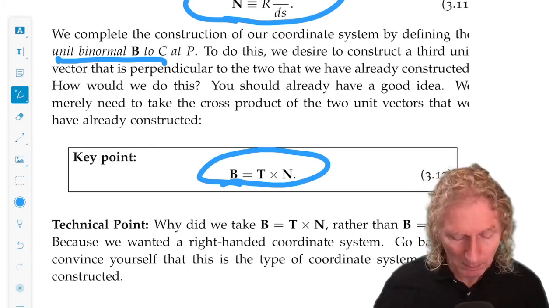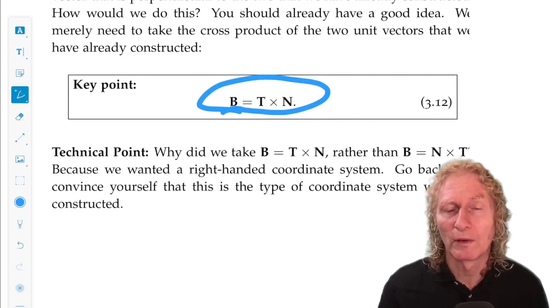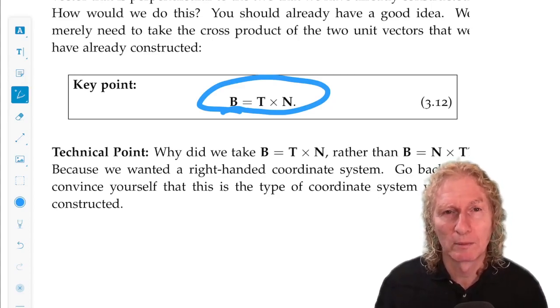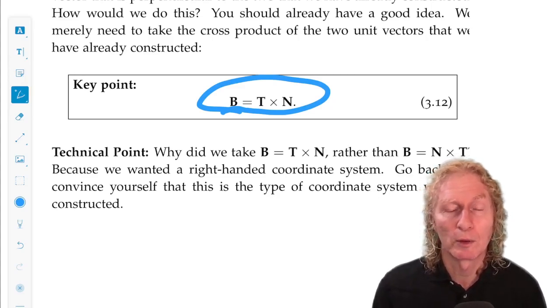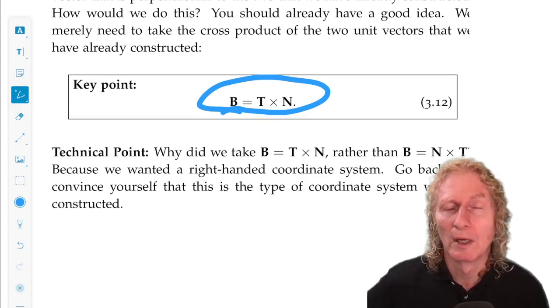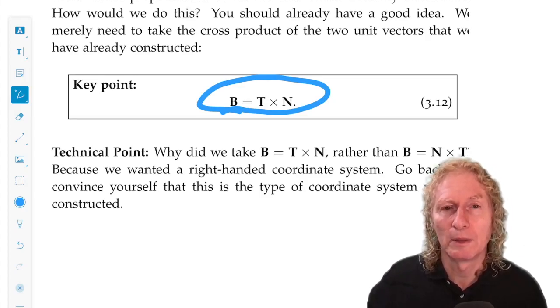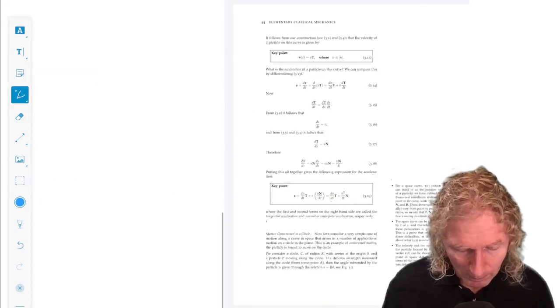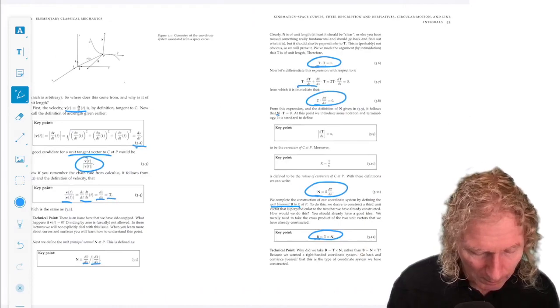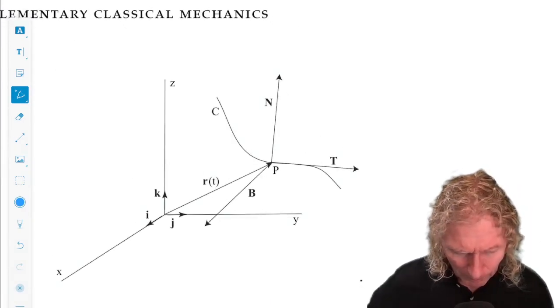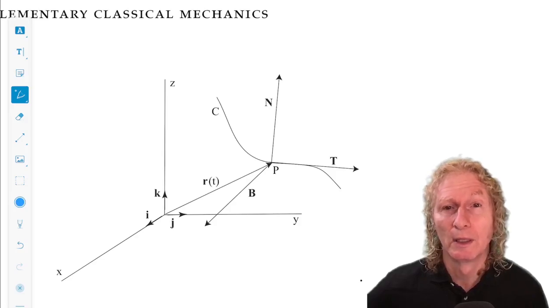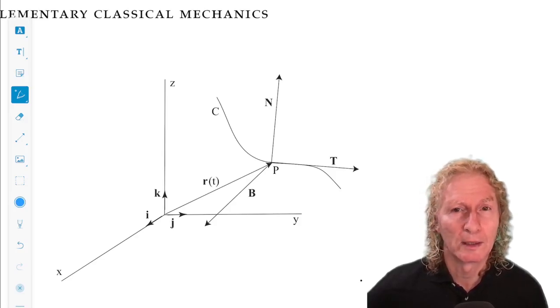Okay, so T, N and B is this coordinate system that moves along the curve, in the sense that it's defined at any point along the curve. And then we have these scalars, curvature and radius of curvature, that have an additional characterization of the curve. And if we look back at our picture, we can draw the picture. And this is what we have. And you can check that B is actually T cross N in the right-handed sense.